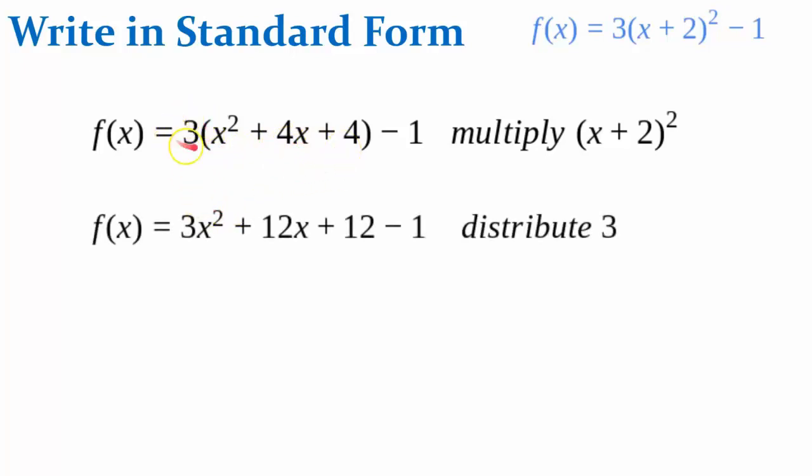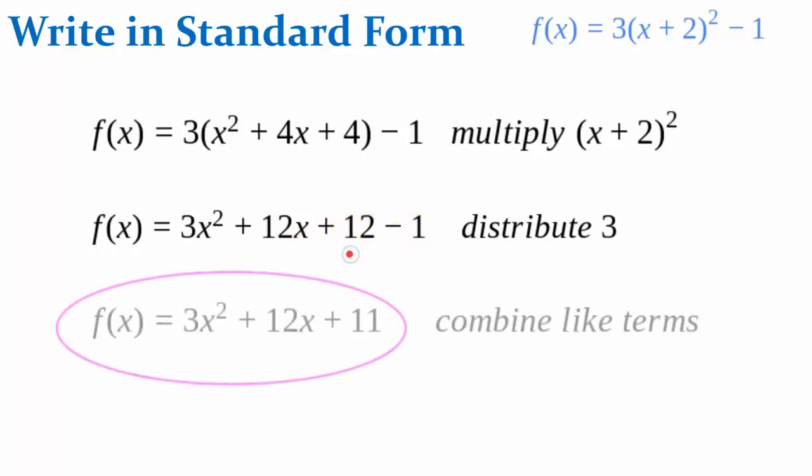Then you want to distribute the value of a, which will result in 3x squared plus 12x plus 12, subtract 1. Now combine your like terms, giving you the same function written in standard form, f of x equals 3x squared plus 12x plus 11.